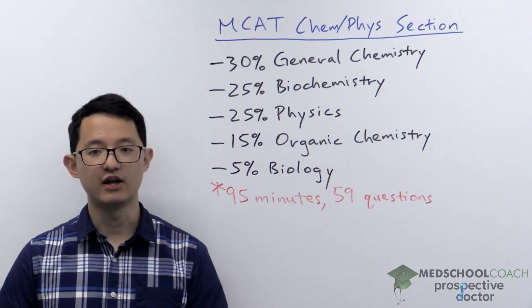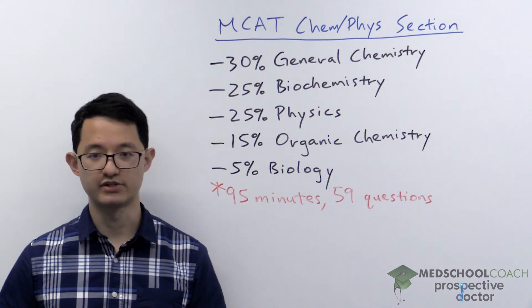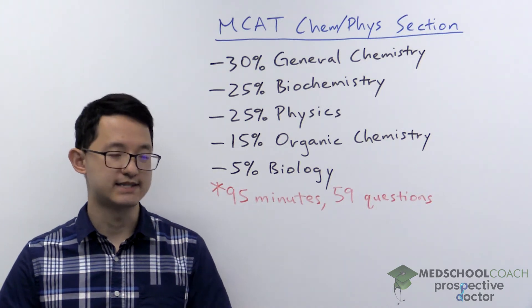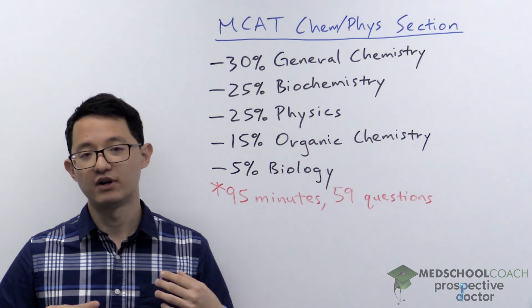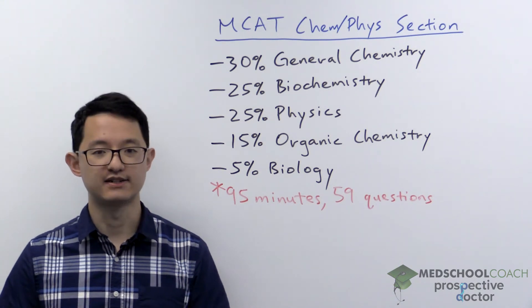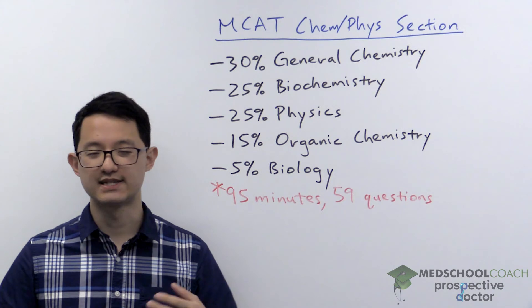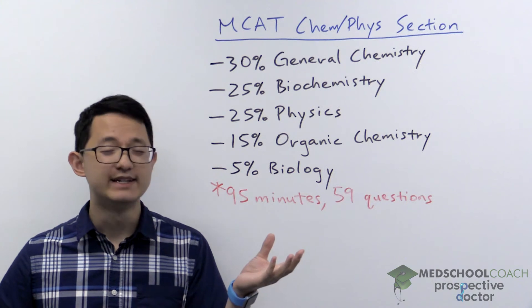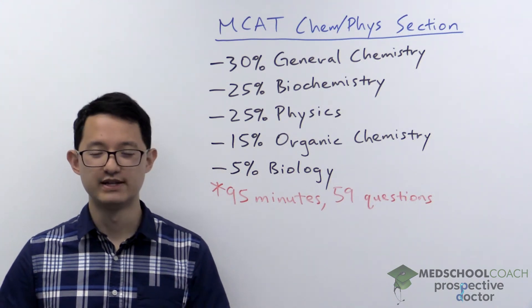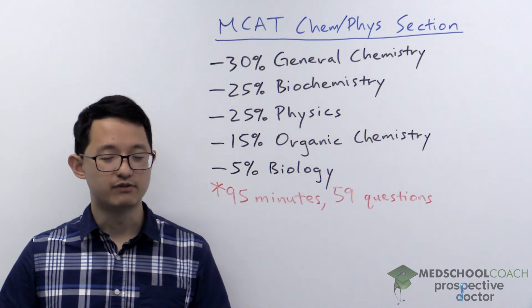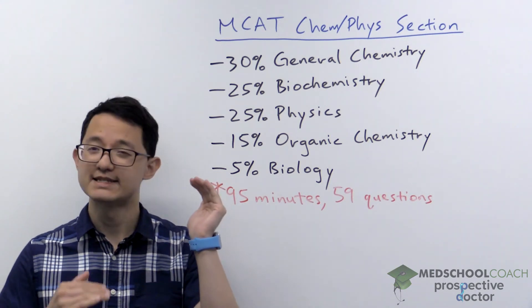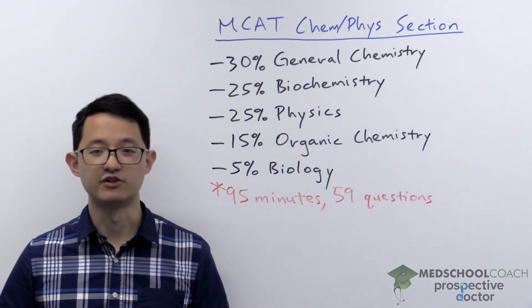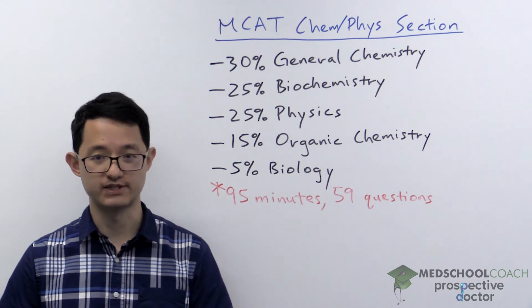One key skill to develop is being able to round numbers. For example, in a passage they might give you 287 grams of a substance, and the molecular weight is about 70.3 grams. Those are some ugly numbers, but with simple rounding you recognize that's about 280 and 70, and 280 divided by 70 is about four. That's the type of approximation you want to be able to do on the MCAT ChemPhys section.